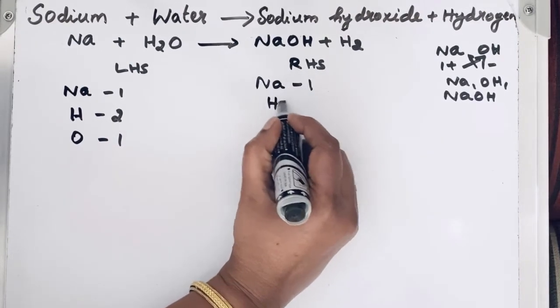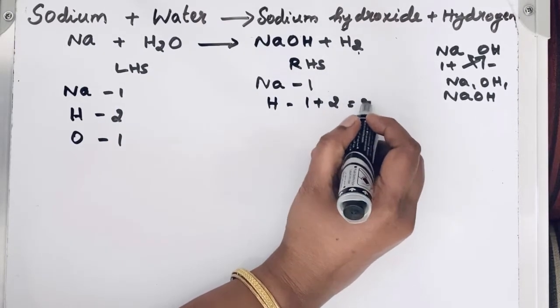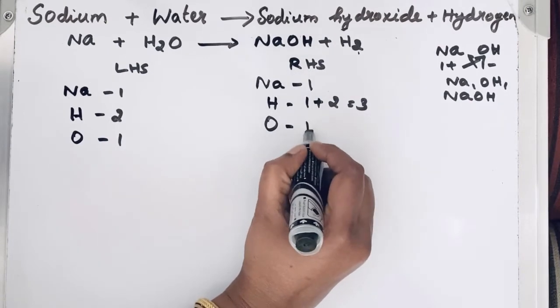Then for hydrogen, here 1. Here we have 2. So 1 plus 2 is equal to 3 we have. Then for oxygen, only 1.